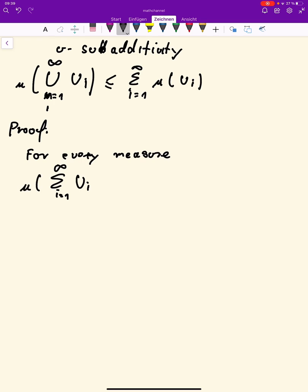then mu of this, so the measure of this, I hope you can tell when I'm writing mu and when I'm writing u, because I have really bad handwriting. So mu of this disjoint union is, well, it's just the sum, i from one to infinity, of the measures of the sets ui. Right? So this is by assumption, this is by how we define a measure, this is true.